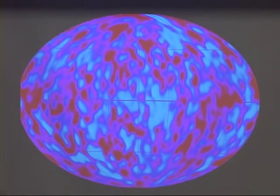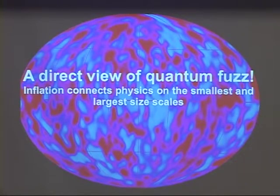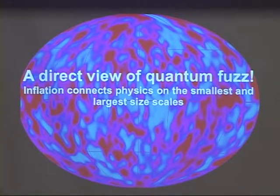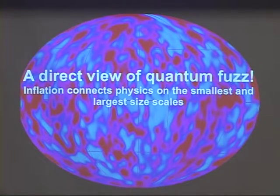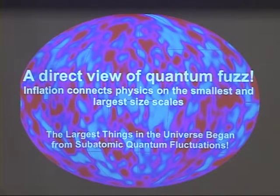Here's the other cool thing about this whole theory of inflation and what we believe to be true: when we look at this image — this beautiful image from the COBE satellite — you could say, well, it just looks like noise. But really, it's a direct view of quantum mechanical fuzz, this uncertainty. Or another way of saying that is: the largest things in the universe began from subatomic quantum fluctuations. We have a quantum origin to our universe.